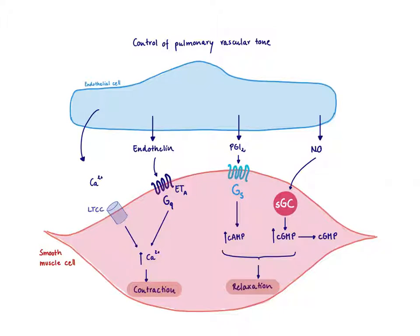Let's first think about what controls the tone in the pulmonary vasculature. We have several mediators that either mediate contraction or relaxation. For pulmonary arterial hypertension, we might have more mediators triggering contraction than relaxation, because pulmonary arterial hypertension is characterized by an imbalance of contractile and dilatory mediators.